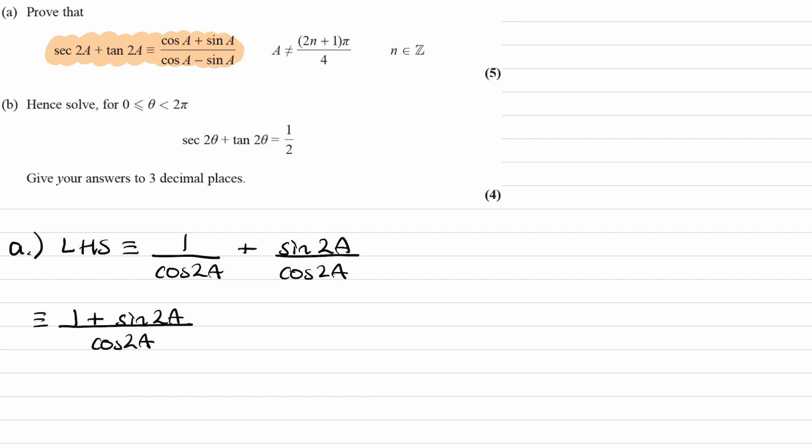This over cos 2a, and now we have a few choices. The cos 2a can be expressed in different ways, in three different ways. So, to figure out how we can rewrite that cos 2a, let's look at the right hand side.